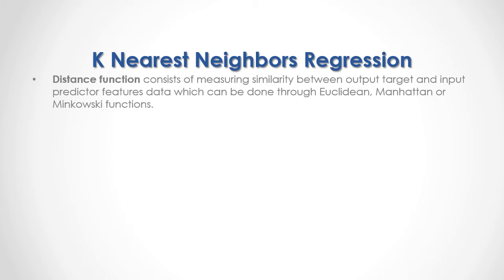The distance function consists of measuring similarity between output target and input predictor features data, which can be done through Euclidean, Manhattan, or Minkowski functions. As a formula, the Euclidean distance between x (input predictor features data) and y (output target feature data) is equal to the square root of the sum from the first to the last of the differences between input predictor features data minus output target feature data, that result to the power of 2.